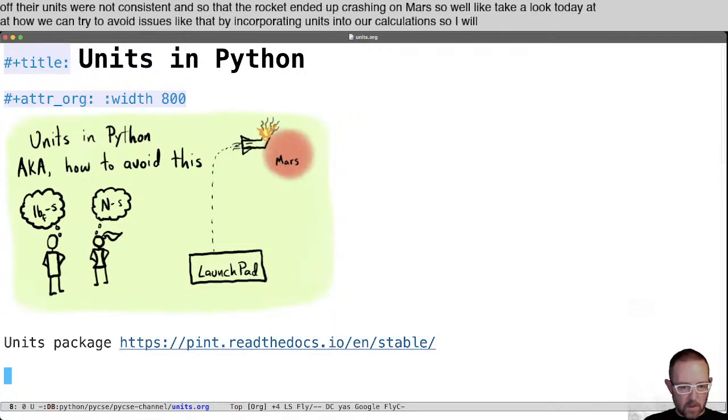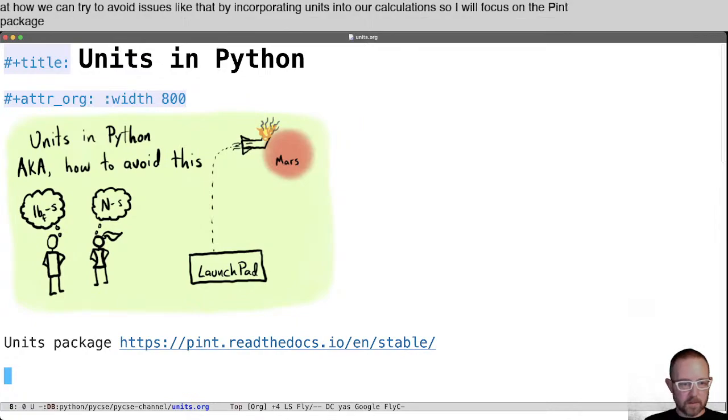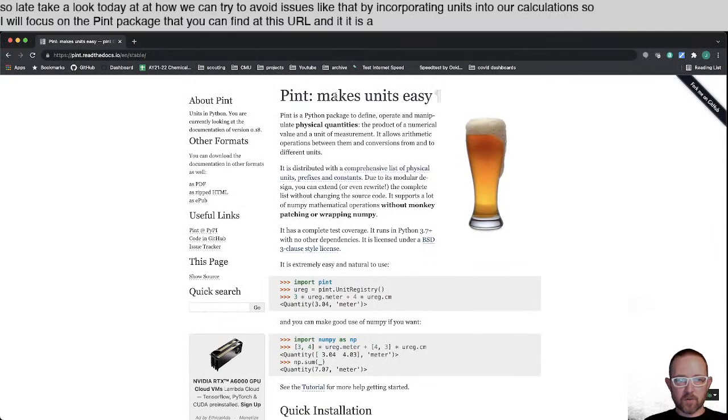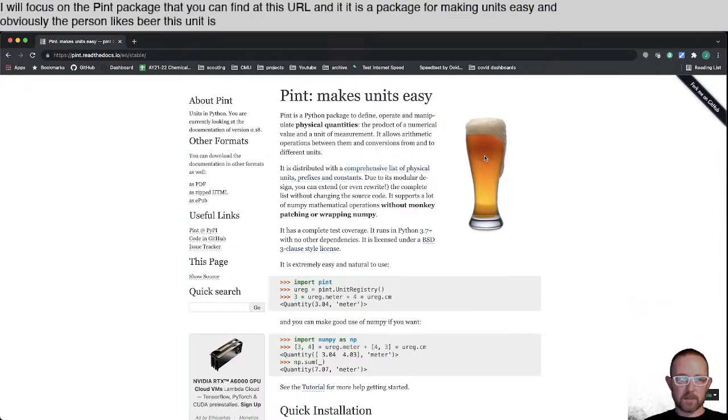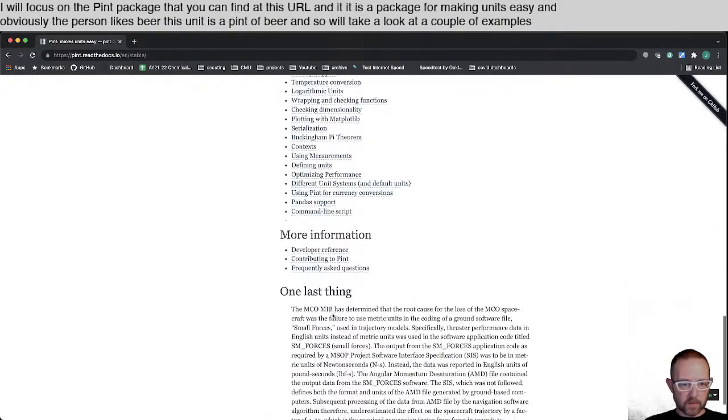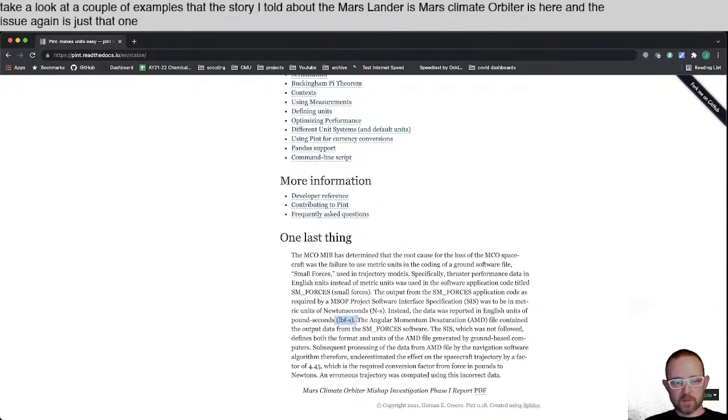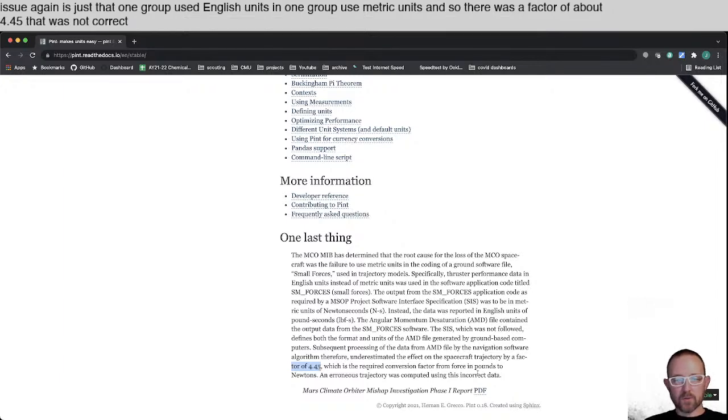So I will focus on the pint package that you can find at this URL. And it is a package for making units easy. And obviously the person likes beer. This unit is a pint of beer. And so we'll take a look at a couple of examples. The story I told about the Mars lander is Mars climate orbiter is here. And the issue again is just that one group used English units and one group used metric units. And so there was a factor of about 4.45 that was not correct due to this conversion factor.